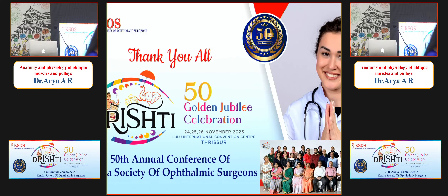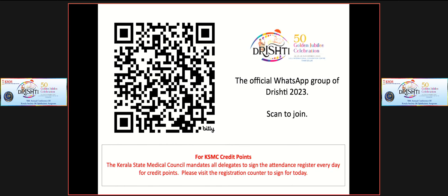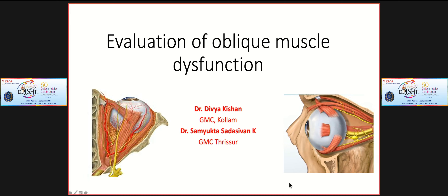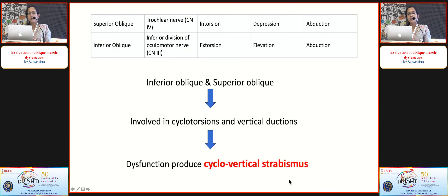The next talk is on evaluation of oblique muscle dysfunction. Superior oblique and inferior oblique muscles with their range of primary, secondary, and tertiary actions are involved in cyclotorsions and vertical ductions. It is virtually impossible to differentiate one action of the oblique from the other, so their dysfunction basically produces a cyclo-vertical strabismus. Comitance is rare, sensory adaptations like amblyopia and ARC are less frequent, and the magnitude of deviation is small but very symptomatic because of the low vertical fusional reserve — normally three to five prism diopters.